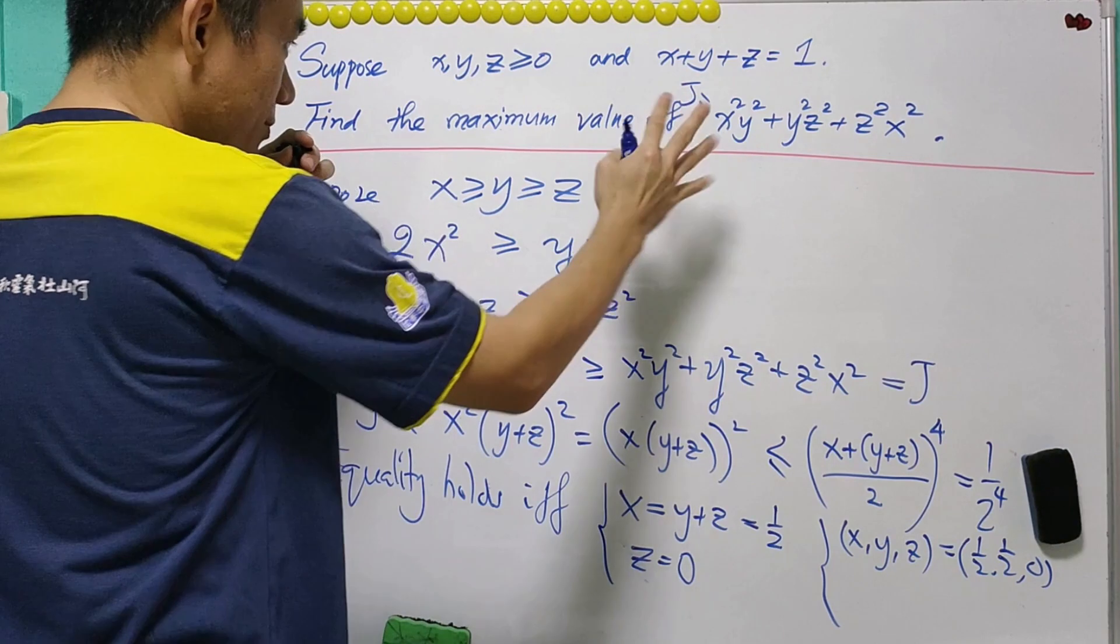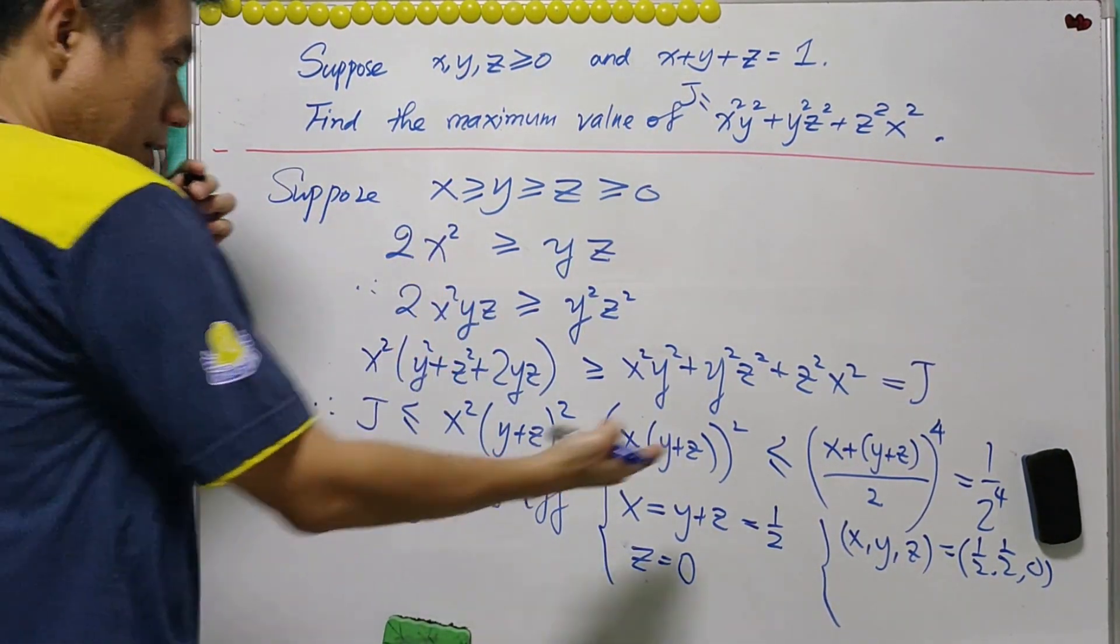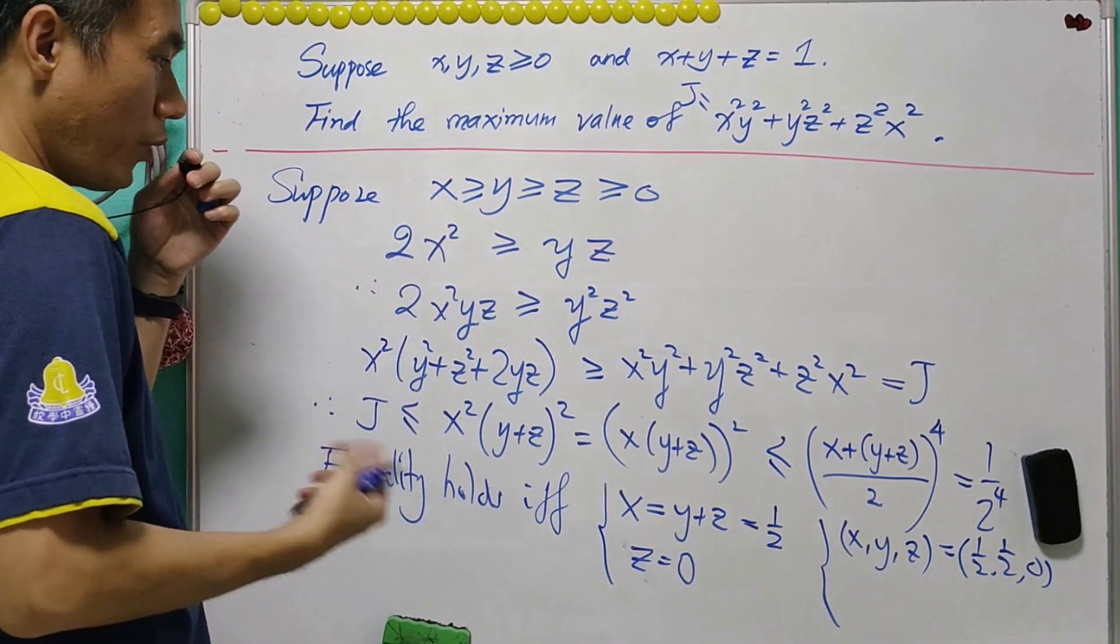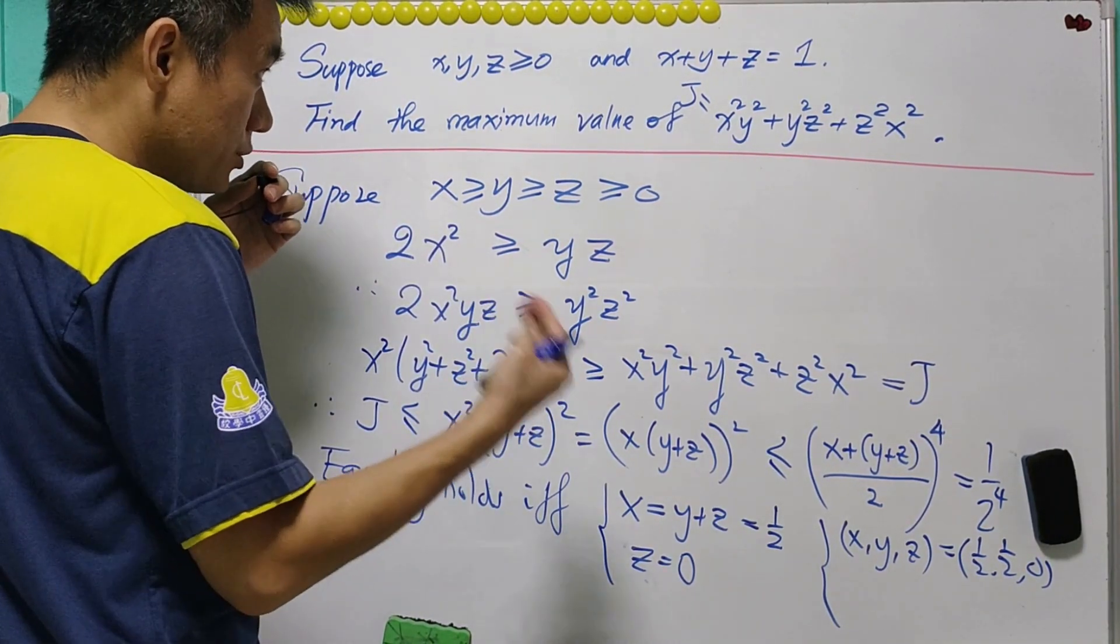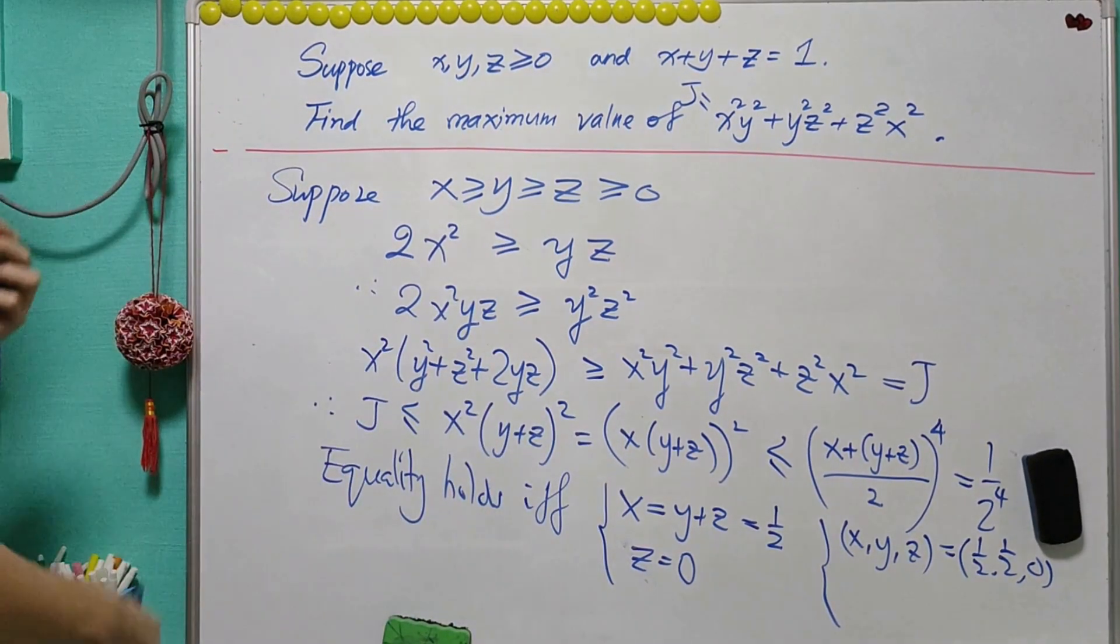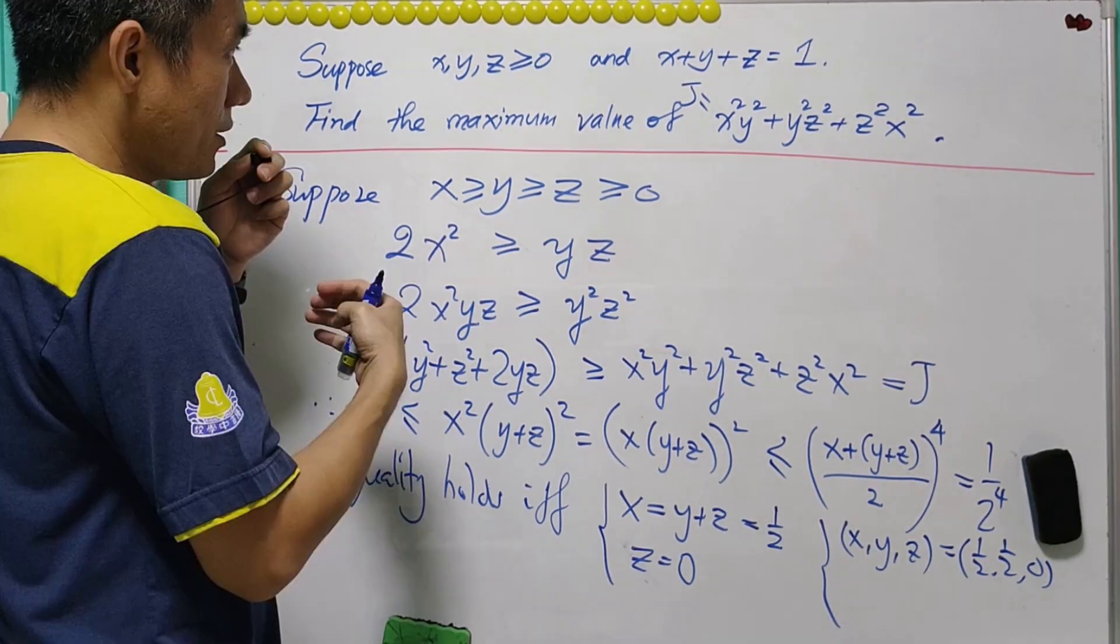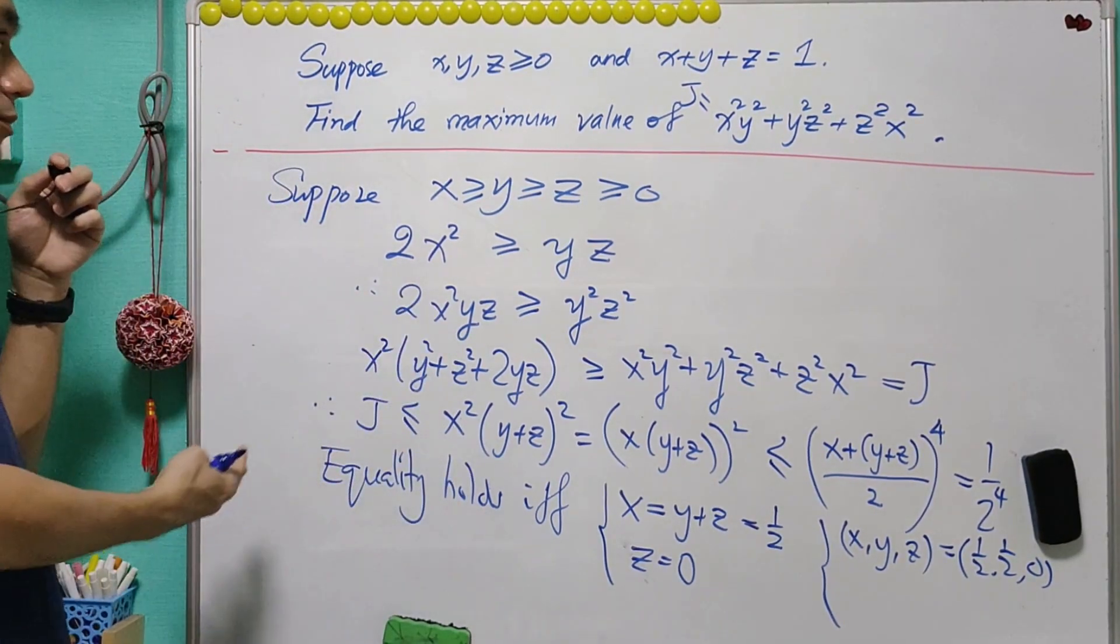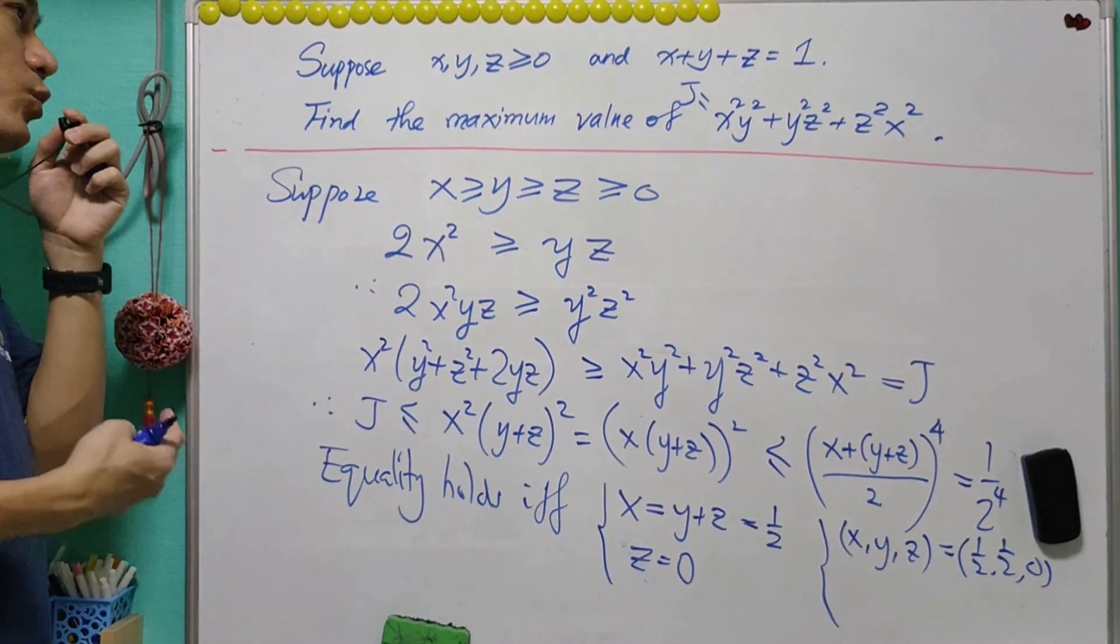If we let x is greater than or equal to y greater than or equal to z greater than or equal to 0, since j itself is symmetrical, then we can actually obtain the maximum value when any x, y, or z equals 0, and the other two of them are equal to half. The main purpose of sharing this problem is to emphasize that the maximum or minimum value not always occurs when x equals y equals z.